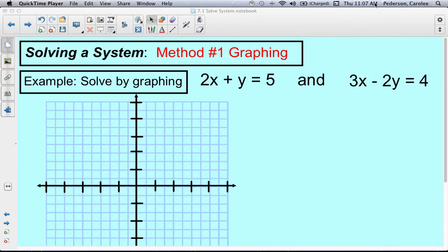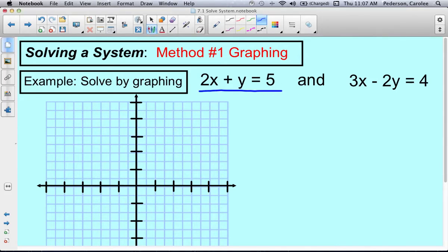Here's an example of solving a system by graphing and finding the point of intersection. I'm going to have this equation be blue, 2x plus y equals 5.